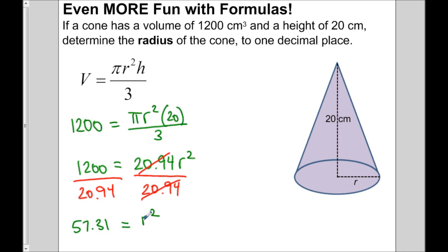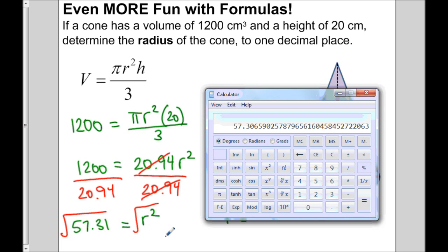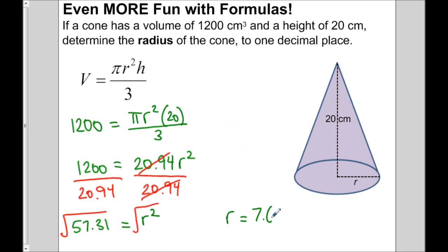Now r squared equals 57.31, but I only want r — so I need to get rid of the square. I do the opposite of squaring, which is taking the square root. So r equals the square root of 57.31, which is 7.6. The radius in this example is 7.6 centimeters. We substituted, simplified to get a value, divided it out, and then — this is a little different from before — we took a square root because r is squared.